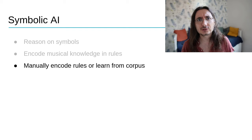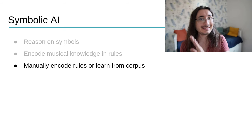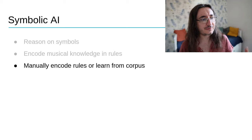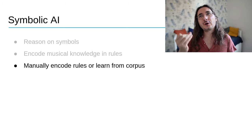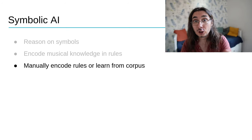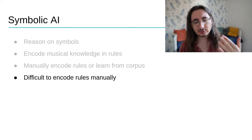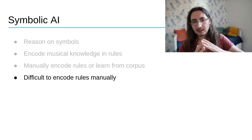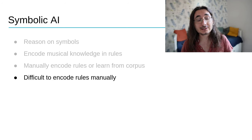There are two ways to encode music rules: manually — a super time-consuming process that takes ages — or we can learn those rules directly from a corpus, which adds a sprinkle of machine learning. Encoding rules manually is a huge hassle. It is super time-consuming, and the other issue is that it's very difficult to identify all the comprehensive rules needed to encapsulate a particular task.